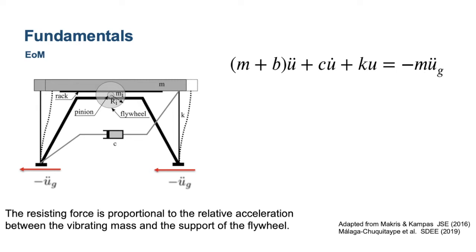Now, if we mass normalize this equation of motion, we divide it by m plus b. We have a new term appearing here, which is omega, the natural circular frequency of the system. In this new expression, you can see exactly what the inerter is doing. Here you can see that it's elongating the period of your structure, and here you can see that it's reducing the effects of the ground motion.